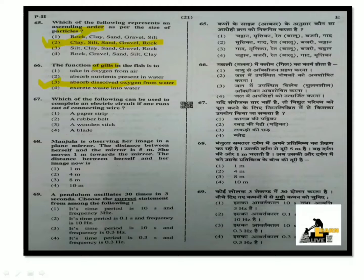Next question: Which of the following can be used to complete an electric circuit if one runs out of connecting wire? To complete an electric circuit, we need a conductor. The options include a paper strip, rubber belt, wooden stick, and a blade. A blade is a conductor. So the answer is option 4, blade.